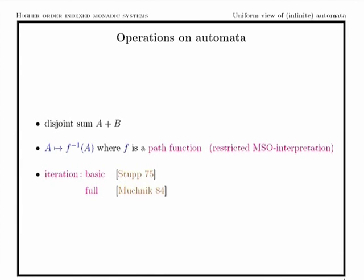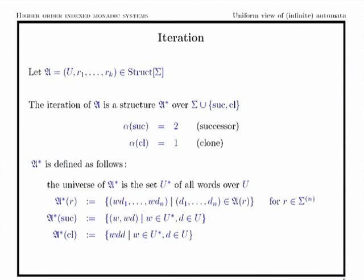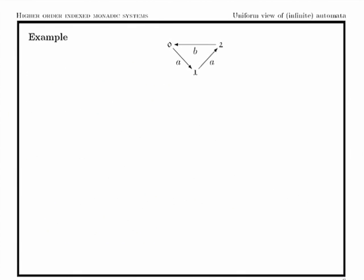The other operation we need is iteration, which has two forms: basic iteration and full iteration. The basic iteration was defined by Stoop in 1975, and the full iteration — which works for any kind of relational structure — was introduced by Mucznik as an extension of basic iteration. If we start with a structure over some vocabulary with binary relations, then the iteration is extended with two predicate symbols: a binary one called 'successor' and a unary one usually called 'clone'.